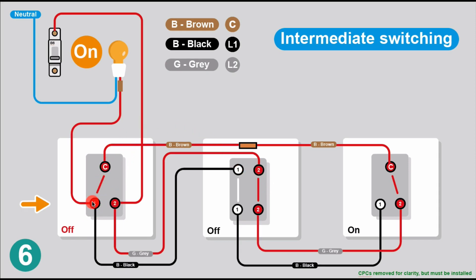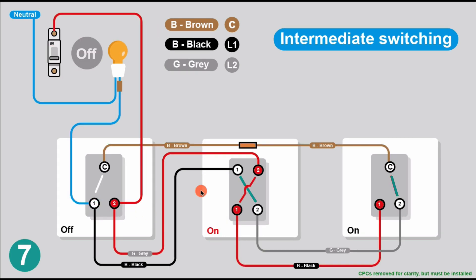Now we've switched the first switch off, so the configuration is off-off-on. There's no connection to common going one way, so power can only go the other way. Power comes around through the two-way switch, through the two-way switch, back through, and onto the light - the light is on. The next configuration is off-on-on. Following the power, it can't get that way; through the intermediate it crosses over, but can't get through the final connection. The light is not going to be on.